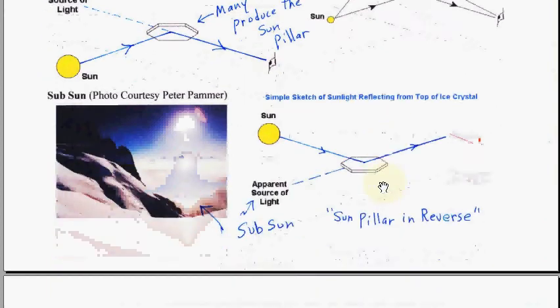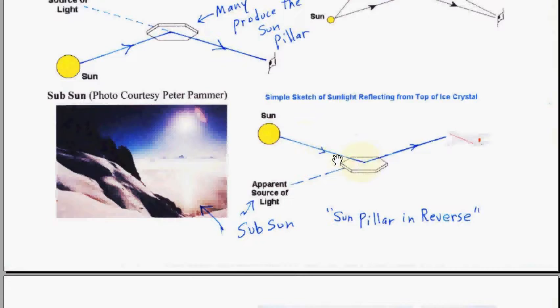Here is the subsun, where light hits the crystal from the top. And then when it reflects, you think the apparent source of light is below. And smear it out somewhat because some crystals have different angles there, slightly. And that's a reverse of a sun pillar, like a sun pillar in reverse. So the sun is up here, and then you see a subsun down there because the sunlight hit, bounced off. And you conclude that the source of the light is down here somewhere, subsun.